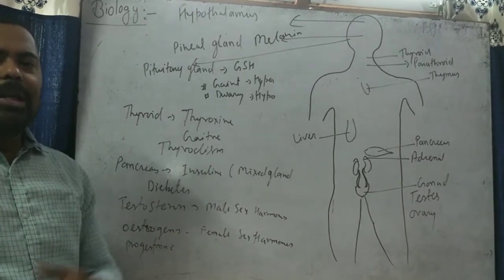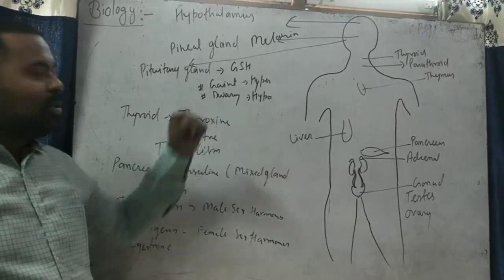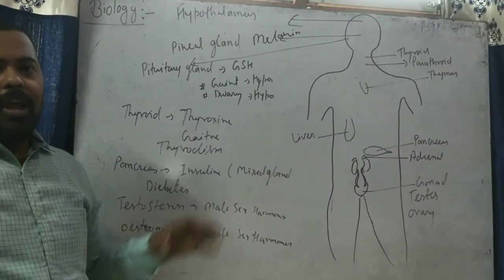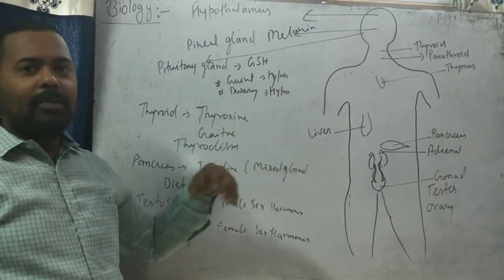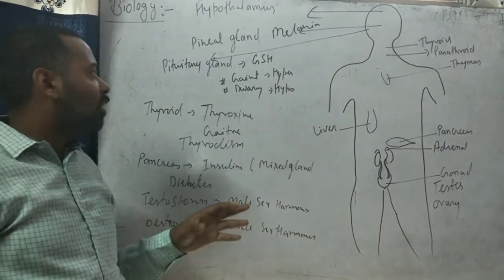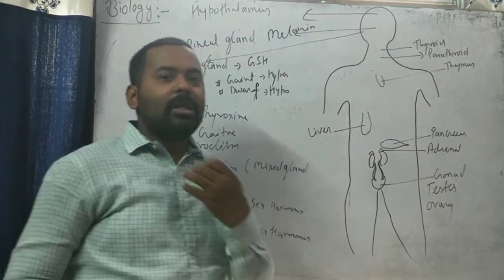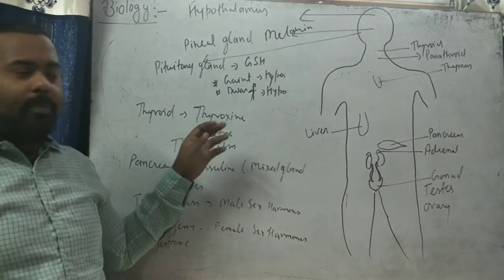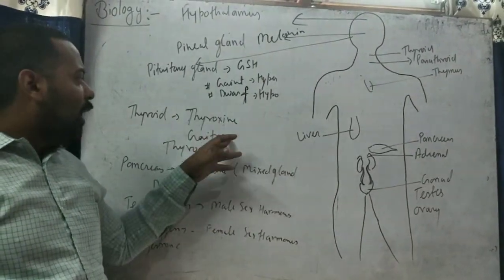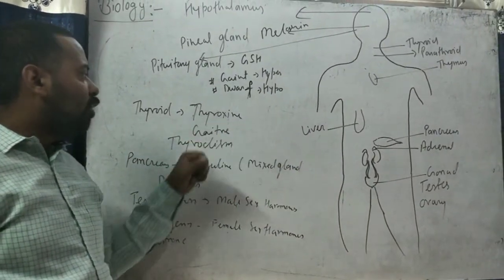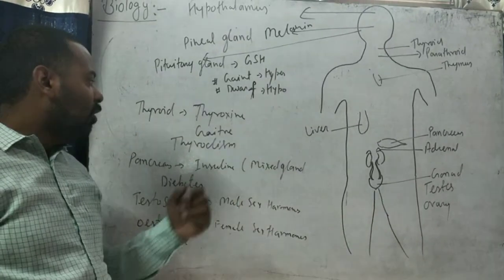Next is the pituitary gland, also known as the master gland because it controls the secretion of all glands. The main hormone secreted by the pituitary gland is GSH (Growth Stimulating Hormone). Hypersecretion of GSH makes the person a giant — growth is very high. Hyposecretion of growth stimulating hormone makes the person a dwarf. The next gland is the thyroid, present near the vocal cord. It is a T-shaped structure which produces thyroxine hormones with the help of iodine consumed in our food.